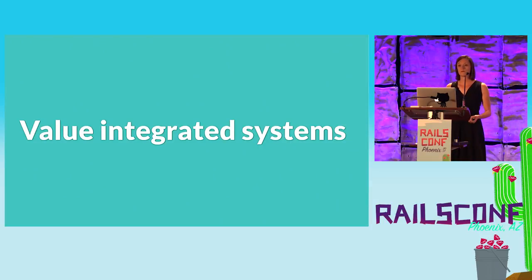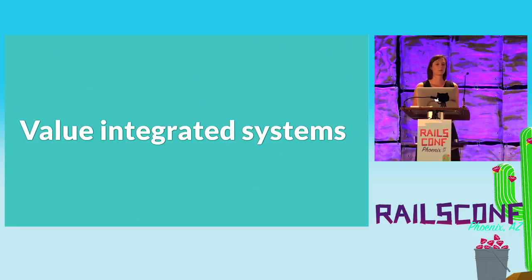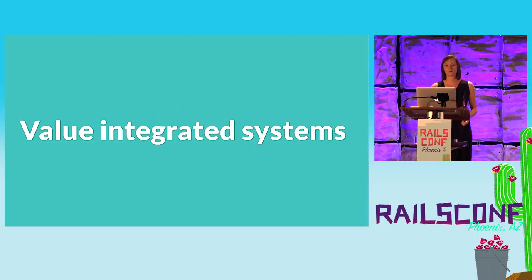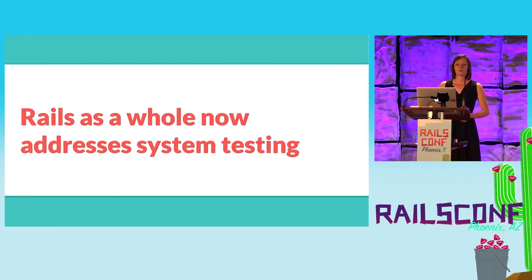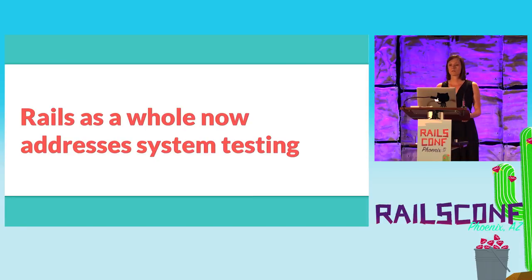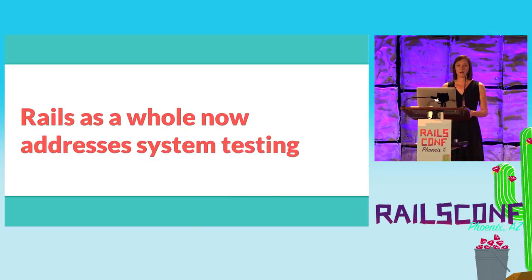Rails values being a single integrated system — a monolithic framework that addresses the entire problem of building applications, from databases to views to web sockets and testing. By being an integrated system, Rails reduces duplication and outside dependencies. Prior to Rails 5.1, Rails didn't address the need for system tests. By adding this feature, we've made Rails a more complete, robust, and integrated system. As DHH said in 2014, Rails was incomplete when it came to system tests. Rails 5.1 closes that gap — you no longer need to look outside of Rails to add system testing to your applications.